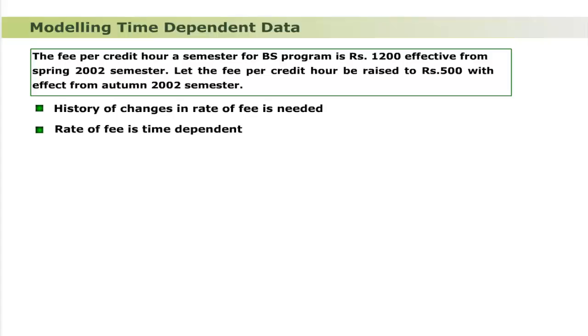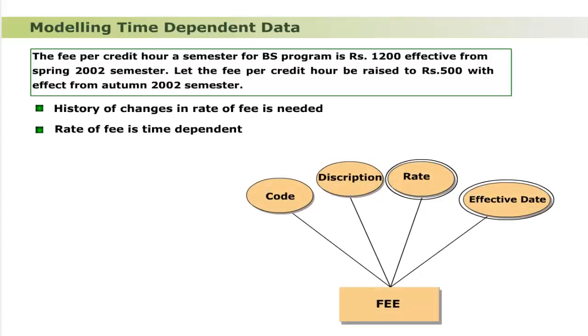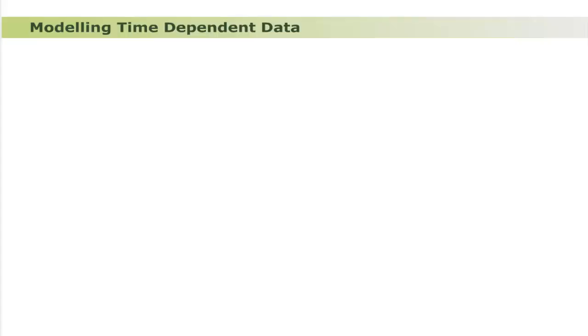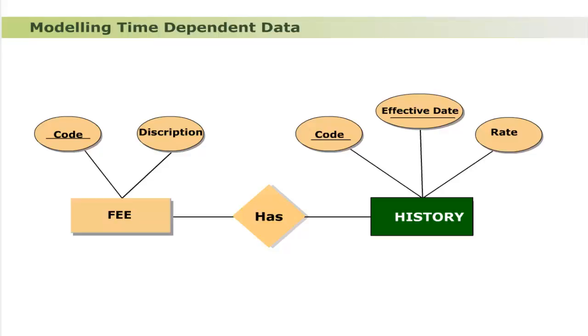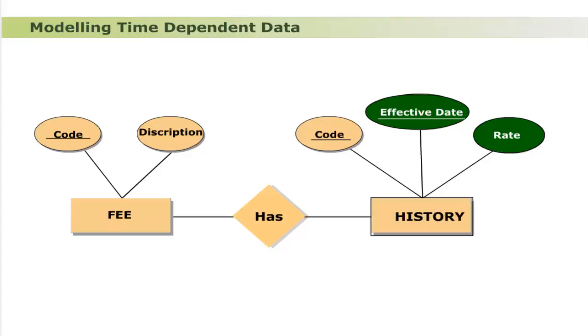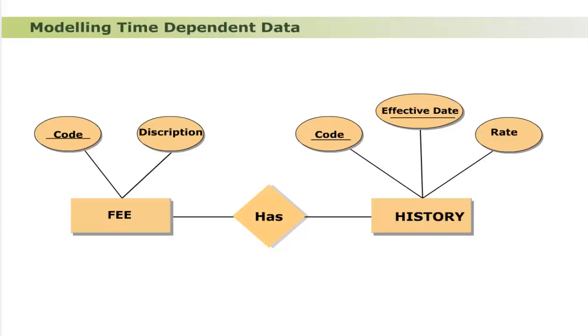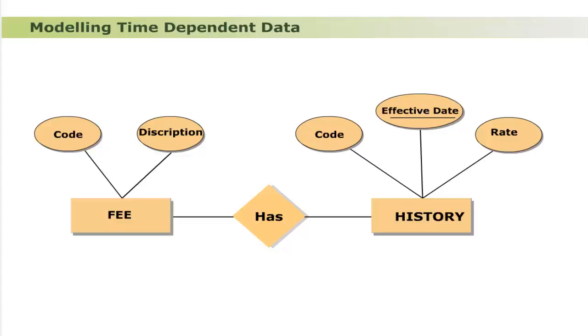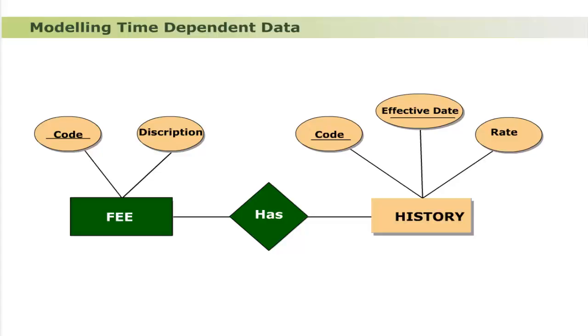Time-dependent data always makes a repeating group. The entity class Fee has single-valued attributes fee code and description, and multi-valued attributes rate and effective date. The two multi-valued attributes rate and effective date are logically related, forming a repeating group converted into new entity class 'history'. The attributes rate and effective date become attributes of entity class History. The composite key of History is composed of fee code and effective date. The relationship 'has' is established between entity class Fee and entity class History.